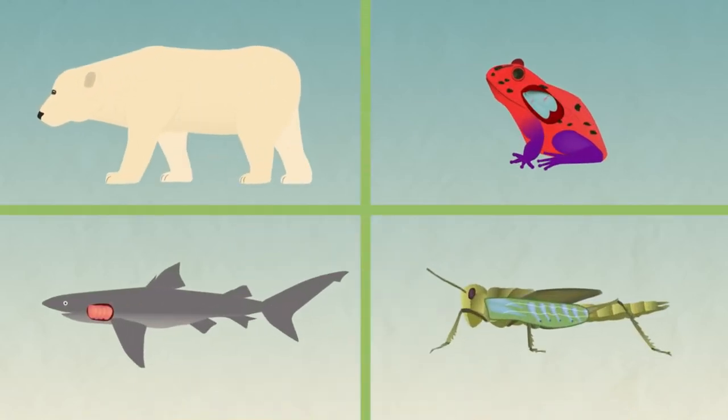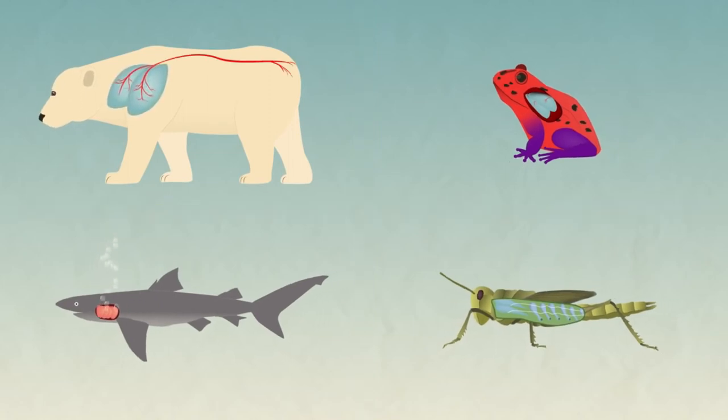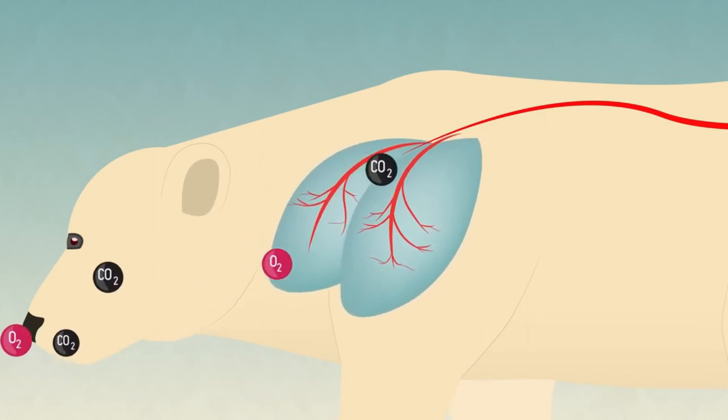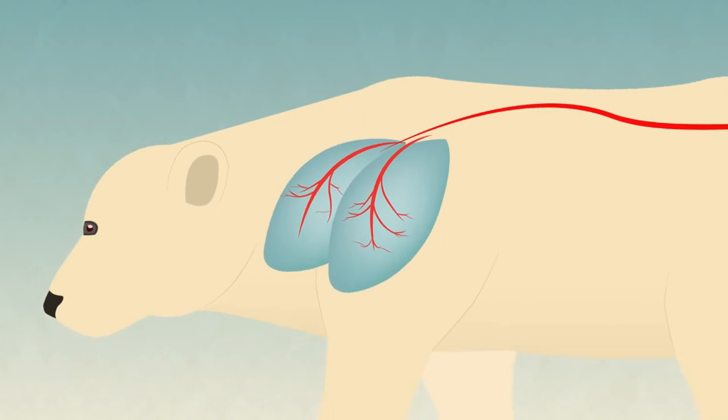These are all special in their own way but they also have a few things in common which make them good at exchanging gases. The most important thing is to create a large surface area. The bigger the surface area the faster the diffusion of the gases can occur.